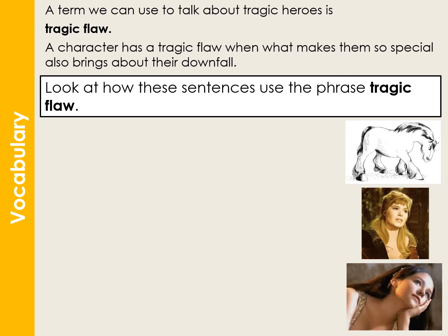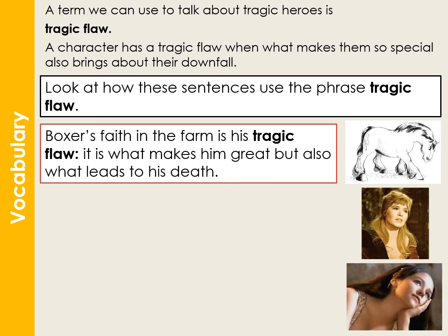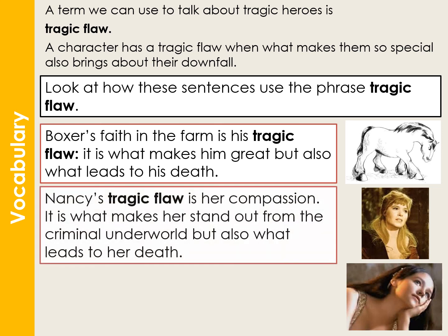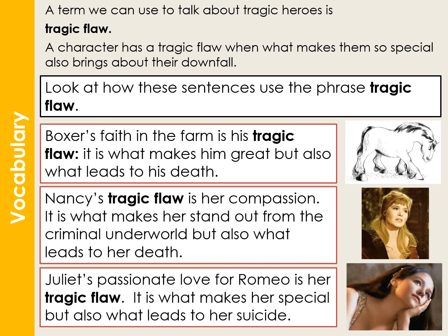Finally, a term we can use to talk about tragic heroes is the tragic flaw. A flaw is an error or a mistake, and it's an aspect of the character which makes the character special but also leads to their downfall. For example: Boxer's faith in the farm is his tragic flaw — it's what makes him great but also what leads to his death. Nancy's tragic flaw is her compassion — it's what makes her stand out from the criminal underworld but also what leads to her death. And Juliet's passionate love for Romeo is her tragic flaw — it's what makes her special but also what leads to her suicide.